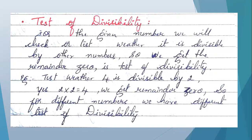We will go to an example. Test whether 4 is divisible by 2. In the 2 table, 4 comes, so 4 is divisible. Yes, that is 2 into 2 is 4. When you divide 4 by 2 we get remainder 0. So for different numbers we have different tests of divisibility.